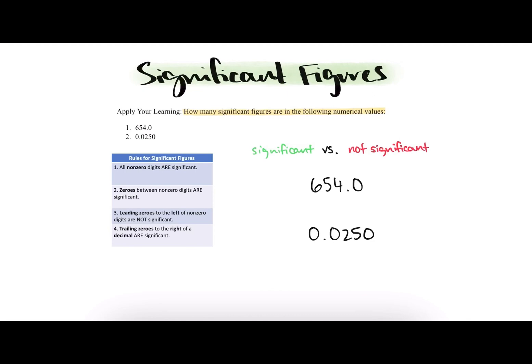Hi everyone, in this video I'll be going over apply learning question number one from the significant figures unit. Question number one has two parts and it's asking us to determine how many significant figures are in the following numerical values. So I've written the two numerical values here and I have also included a clip of the rules for significant figures.